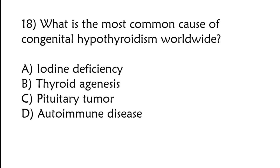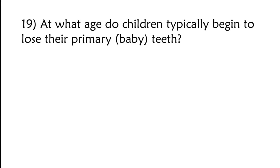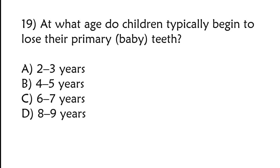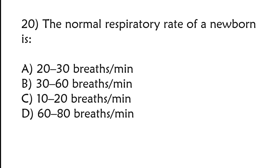What is the most common cause of congenital hypothyroidism worldwide? Iodine deficiency, thyroid agenesis, pituitary tumor, autoimmune disease. Correct answer is option A, iodine deficiency. At what age do children typically begin to lose their primary teeth? Two to three years, four to five years, six to seven years, eight to nine years. Correct answer is option C, six to seven years.